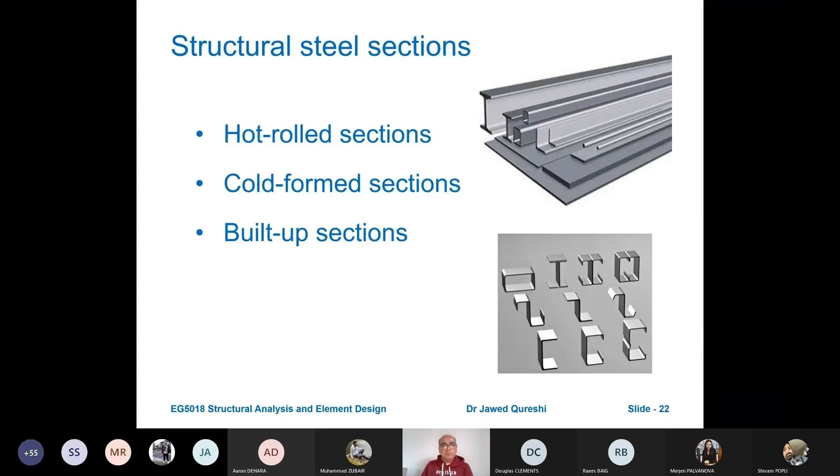The steel sections are produced through hot roll process and through cold form sections and built up sections. The normal sections that we see are hot roll sections. Very thin sections like profile sheeting are produced through cold form process.